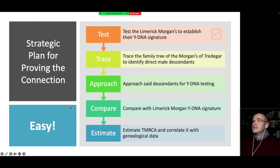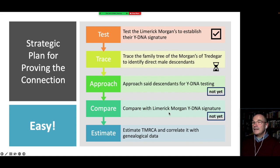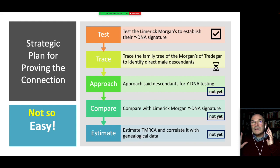As far as this strategic plan is concerned: we have been able to establish the Y-DNA signature of the Morgans of Limerick, which has confirmed the accuracy of the genealogy back to 1655 — a good result. However, a lot of the direct male lines of the Morgans of Tredegar have gone extinct; we haven't been able to approach anyone for Y-DNA testing on the Tredegar line; and we haven't been able to compare the two signatures or establish when they connect. This is a useful example of how you can put a logical plan into motion and also encounter real hurdles and challenges along the way.